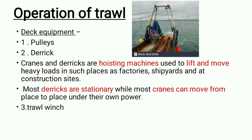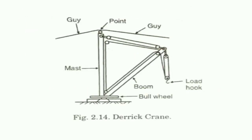Trawl winches are drum-like structures operated by hydraulic devices. They help the pulleys to pull the gear back to the boat when we are towing. This is a diagram of a derrick device showing the mast point, guy, and load hook — how it is pulled. Derricks help in the movement of the trawl net, both when we throw it into the water and when we pull it back.